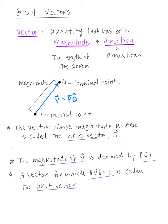A vector with a magnitude of one is called a unit vector.